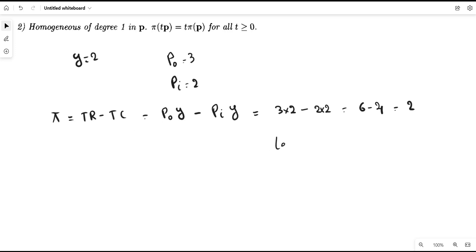Let's suppose t equals 2, for example. Now we scale up all these prices, that is price of output and price of input by 2.